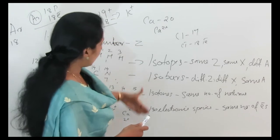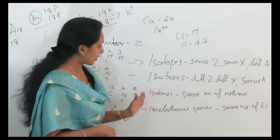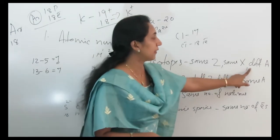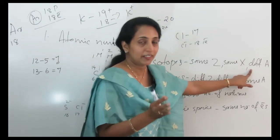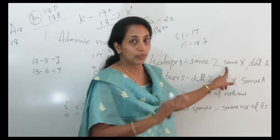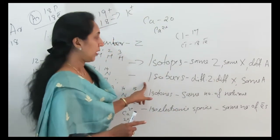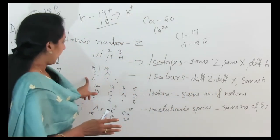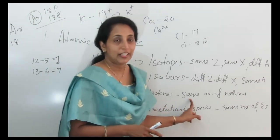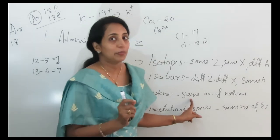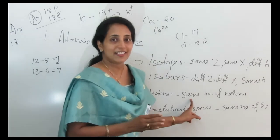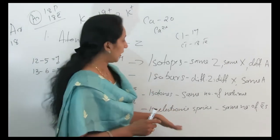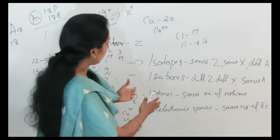Now let's compare these four: Isotopes means same atomic number but different mass number — same symbol because they are the same element. Isobars means different atomic number but same mass number — symbols are different. Isotones means same number of neutrons, where neutrons equal mass number minus atomic number. Isoelectronic species means same number of electrons.